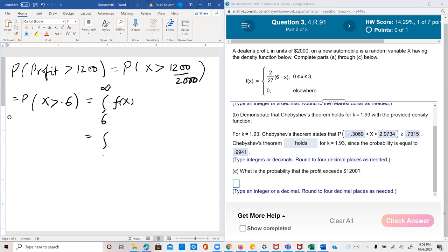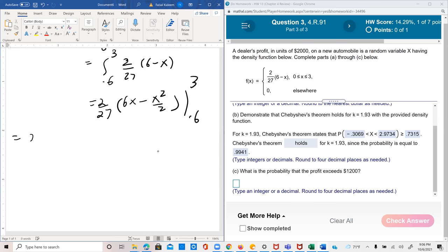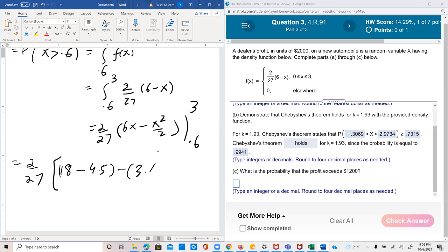That's the probability we need. So greater than 0.6 means 0.6 to 3, 2 over 27, 6 minus x, because after 3 it's 0. So 2 over 27, 6x minus x squared by 2. So now we have both the limits 0.6 and 3. So 2 over 27, when you put the upper limit, 6 times 3 is 18 minus 9 over 2 is 4.5. And then minus the lower limit would be 6 times 0.6 is 3.6, and minus 0.6 squared by 2 would be 0.18. So 13.5 minus 3.42 times 2 divided by 27, 0.7467.